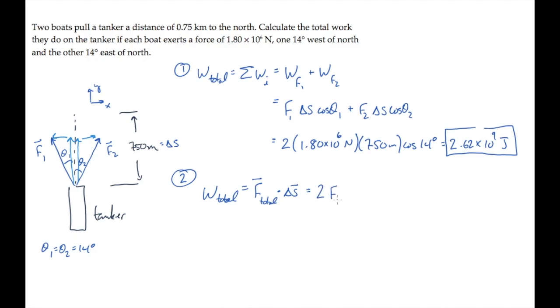So this dot product becomes twice the Y component of either force times the magnitude of the displacement, delta S. The Y component is the magnitude of the force times cosine of the angle.